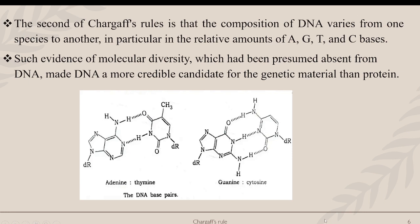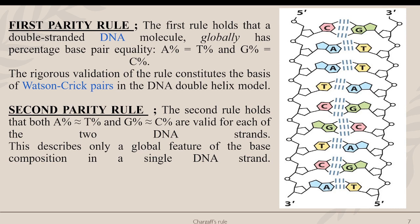Here we can see adenine equals thymine, guanine equals cytosine — the DNA base pairs. As for the first parity rule: the first rule holds that a double-stranded DNA molecule globally has percentage base pair equality — A% equals T% and G% equals C%. The rigorous validation of this rule constitutes the basis of Watson-Crick base pairs in the DNA double helical model.